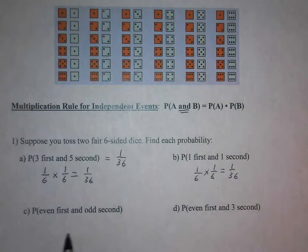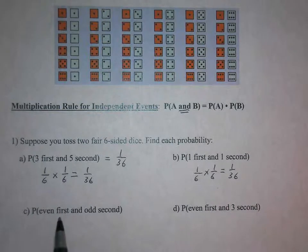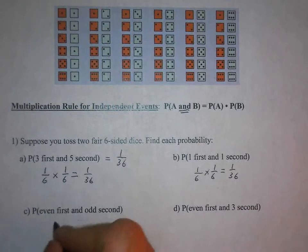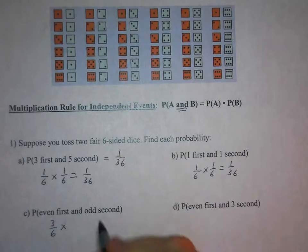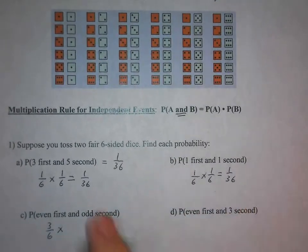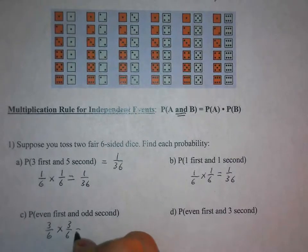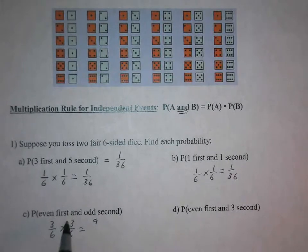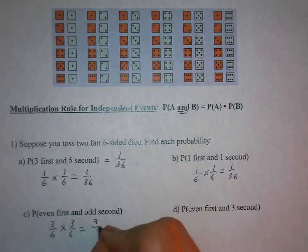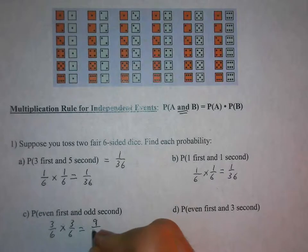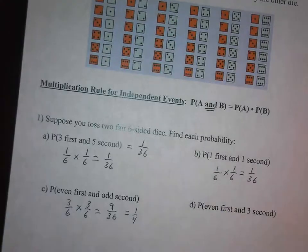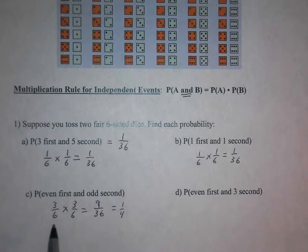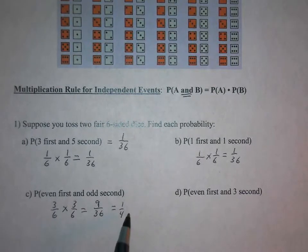In part C, we're going to roll an even first and an odd second. Rolling an even number first — half the numbers are even, or three out of six. An odd on the second is also three out of six. Multiply straight across: three times three is nine, six times six is 36, giving nine out of 36. That reduces to one-fourth. You could also simplify three-sixths to one-half, then one-half times one-half equals one-fourth right away.